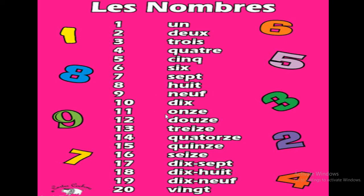Eleven is aunts, twelve is doos, thirteen is tres, fourteen is cathars, fifteen is skange, sixteen is sis, seventeen is decept, eighteen is de youth, nineteen is de naf, twenty is wench.